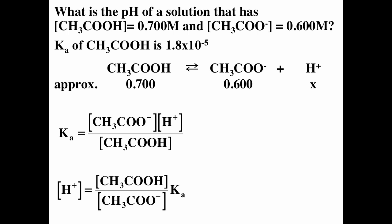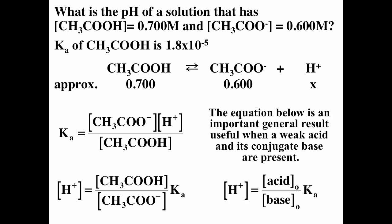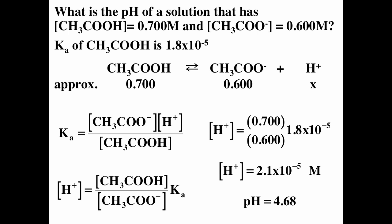Instead of solving for X directly, we start with the equilibrium expression: Ka = [acetate⁻][H⁺] / [acetic acid]. So the hydrogen ion concentration equals (acetic acid concentration / acetate ion concentration) × Ka. The acid and base concentrations here are the initial concentrations. Plugging in: (0.7 / 0.6) × 1.8 × 10⁻⁵ gives [H⁺] = 2.1 × 10⁻⁵, and pH = 4.68. Our approximation checks out because 2.1 × 10⁻⁵ is indeed negligible compared to 0.7 and 0.6.